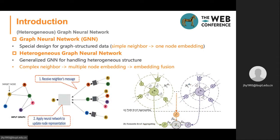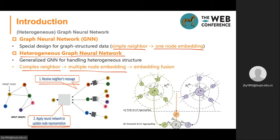Graph neural networks (GNNs) are specially designed for graph-structured data. GNNs will first receive neighbors' messages and then apply a neural network to update node representations. But traditional GNNs just focus on simple neighbors and single node embeddings. The heterogeneous graph neural network is a generalized GNN for handling heterogeneous graphs, where we can learn multiple types of node embeddings, and the last step is embedding fusion.